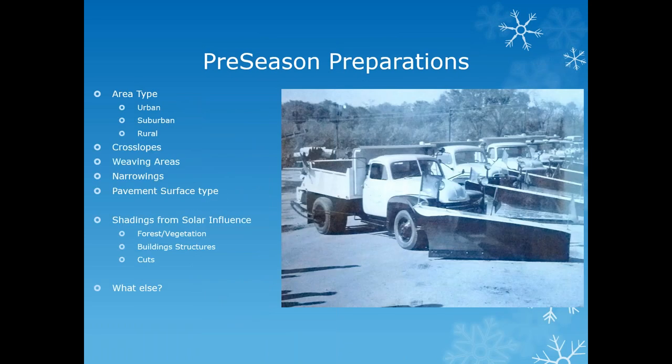Additional route awareness items include cross slopes — not all roads are crowned — and transitional areas with different slopes that can create slick spots and accident risk. Weaving areas, on and off ramps, and merging areas are high-risk and need special attention. Road narrowings should be noted so you don't run your plow into the dirt. Pavement surface types matter — one municipality found a washed-rock surface couldn't be cleared with regular salt and required a salt brine treatment to penetrate between the rocks.